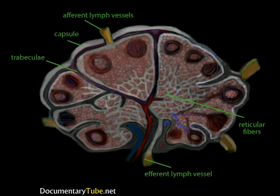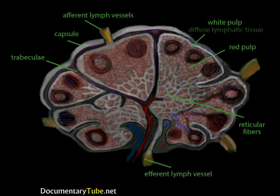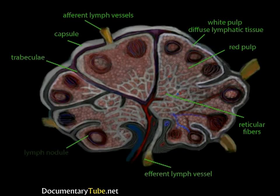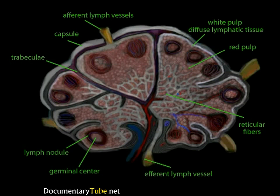Inside the spleen, there are two types of tissue: red pulp and white pulp. The white pulp is composed of diffuse lymphatic tissue and lymph nodules, much like the lymph node, and surrounds the arteries which enter the spleen. The red pulp is made of twisted veins and reticular fibers full of blood cells from the capillaries of the spleen. Lymph nodules contain germinal centers where rapid mitosis of lymphocytes can take place in response to foreign invaders found in the lymph. Lymphocytes produced in the germinal centers are released into the lymph and eventually reach the bloodstream, where they can be transported to the tissues.